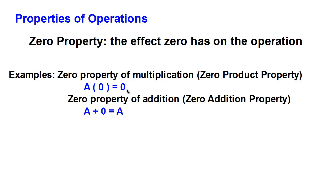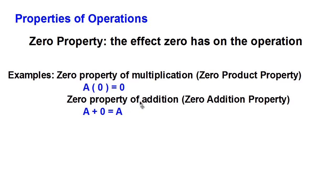That turns out to be a pretty crucial thing when it comes to things like factoring, finding the zeros, the x-intercepts, or the horizontal intercepts of a function. The zero property of addition is what happens if we add the number zero to a number A. Adding or subtracting zero results in the original number A.